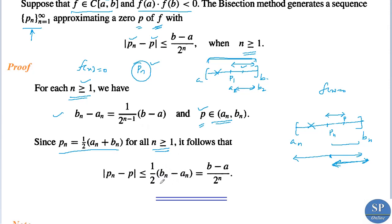Since (1/2)·(bn - an) = (b - a) / 2^n — because we can replace bn - an by (b - a)/2^(n-1), giving (1/2)·(b - a)/2^(n-1) = (b - a)/2^n — we conclude that |pn - p| ≤ (b - a) / 2^n, which completes the proof.